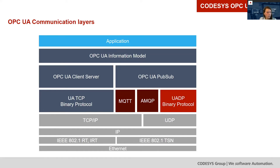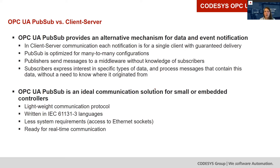OPC UA PubSub provides an alternative mechanism for data and event notification. In comparison to client-server, which is communication with single clients with guaranteed delivery, PubSub is meant for many-to-many configurations. A PubSub publisher sends a message to a middleware without knowledge of any subscriber, and the subscribers express their interest in specific types of data and process messages that contain this data, without the need to know where it originated from.